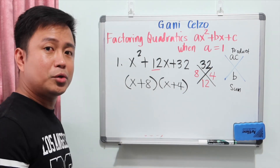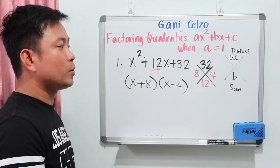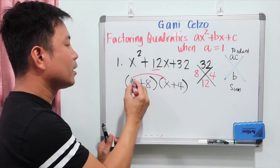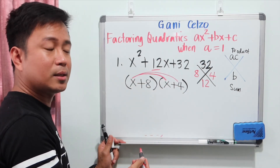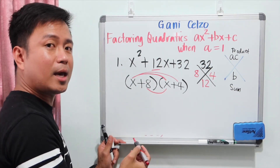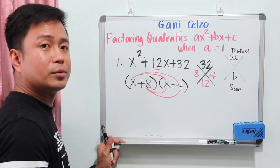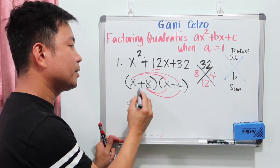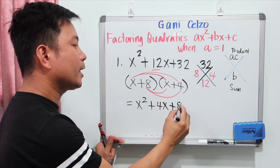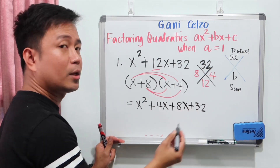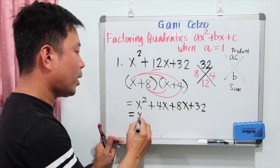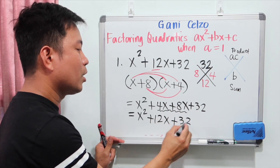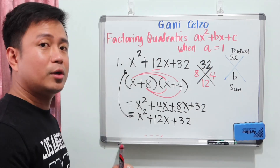You can use the distributive property to verify: x times x is x squared, x times 4 is 4x, 8 times x is 8x, and 8 times 4 is 32. So that's x squared plus 4x plus 8x plus 32. Combining like terms, you get x squared plus 12x plus 32, which is the same as the original quadratic.